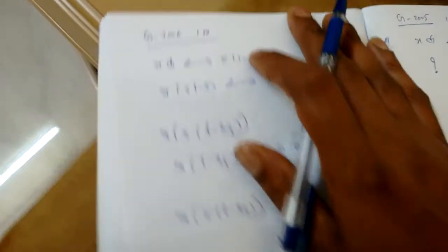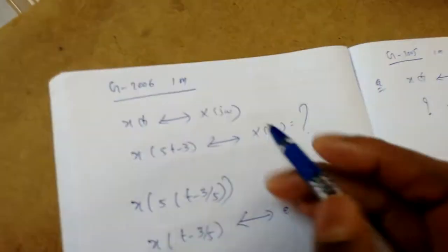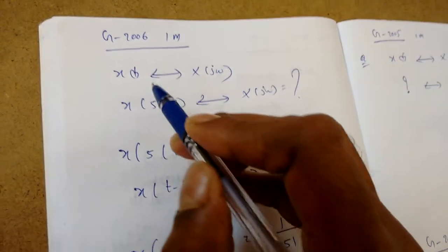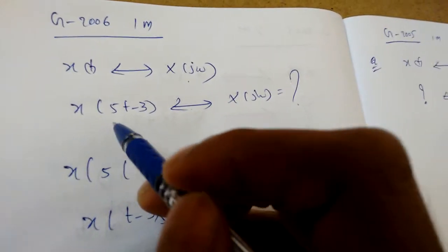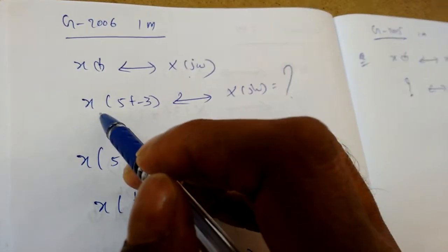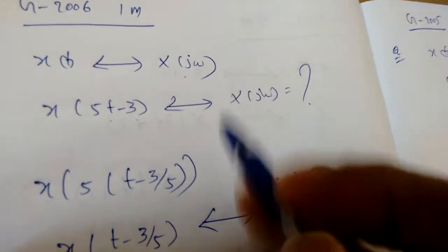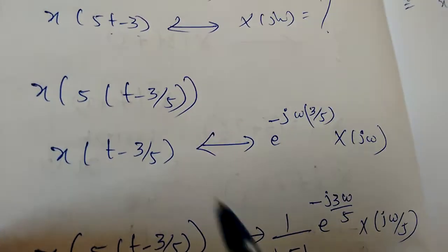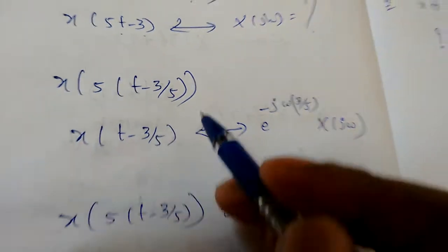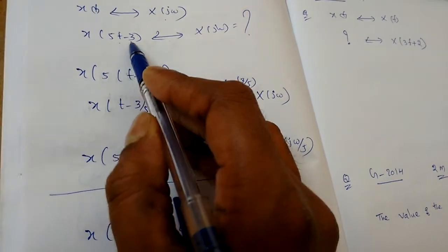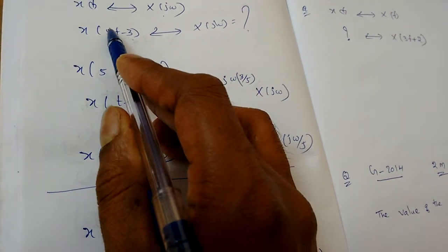The next problem came in GATE 2006 for one mark. Given x(t) with Fourier transform X(jω), what is the Fourier transform of x(5t − 3)? There are two methods for this. The easy method one: first apply shifting, i.e., consider x(t − 3), removing the 5 initially.